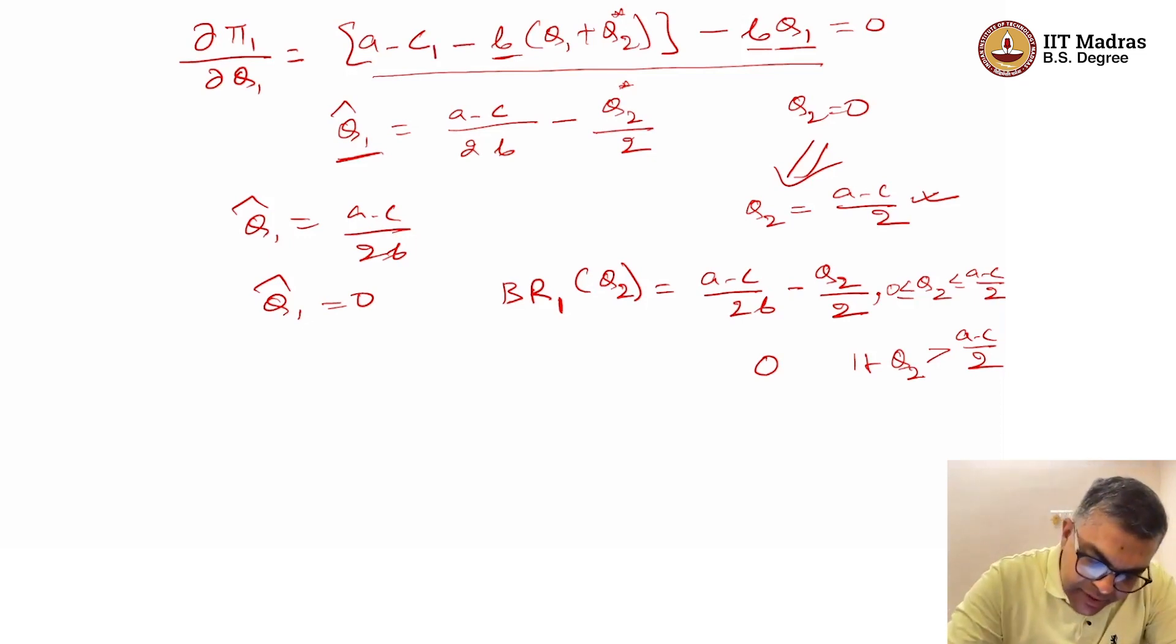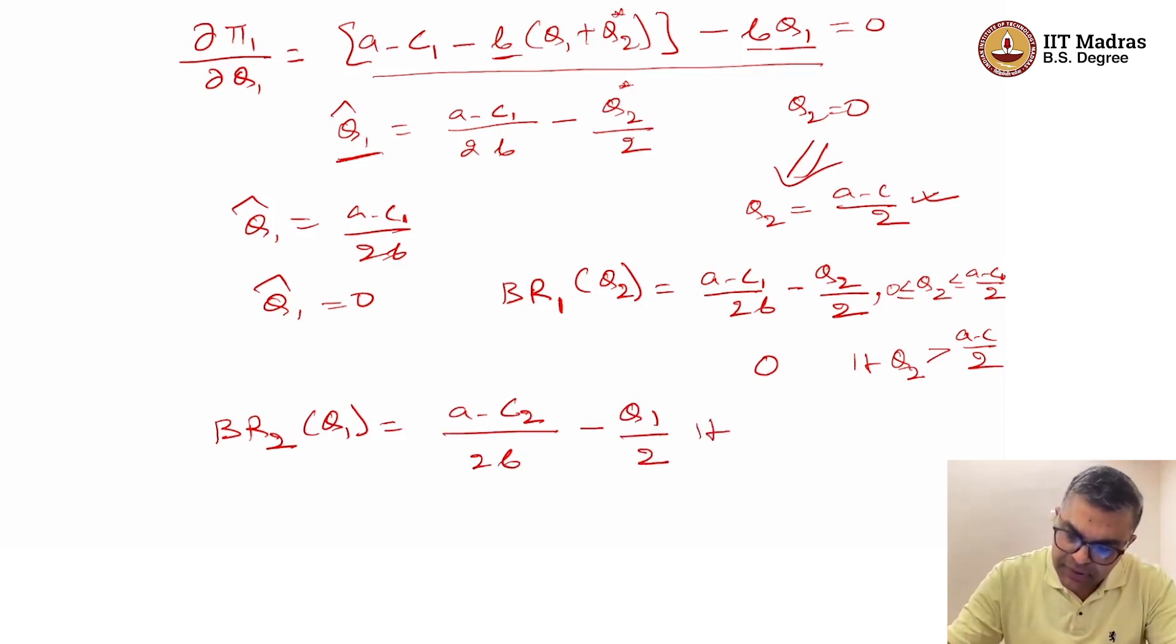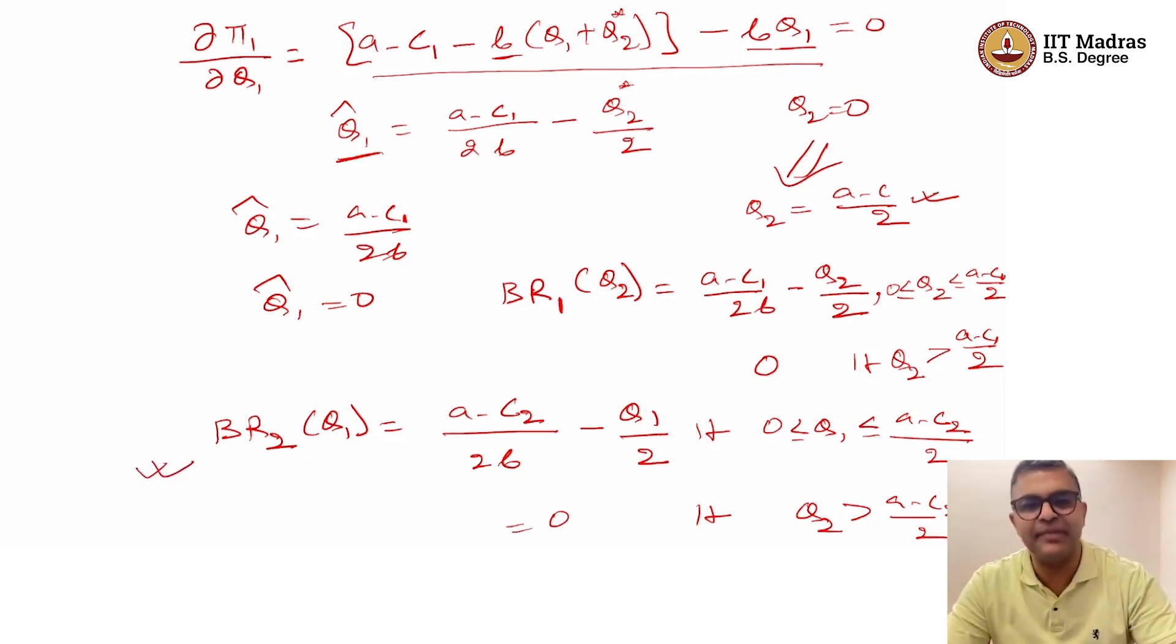We have to go further. If Q2 was higher than this, then firm 1 should not produce. If Q2 is between 0 and A minus C1 by B, the best response is A minus C1 by 2B minus Q2 by 2, and 0 if Q2 happens to be greater than A minus C1 by B. Here, we have C1—I have missed the notation—for firm 1's cost per unit is C1.